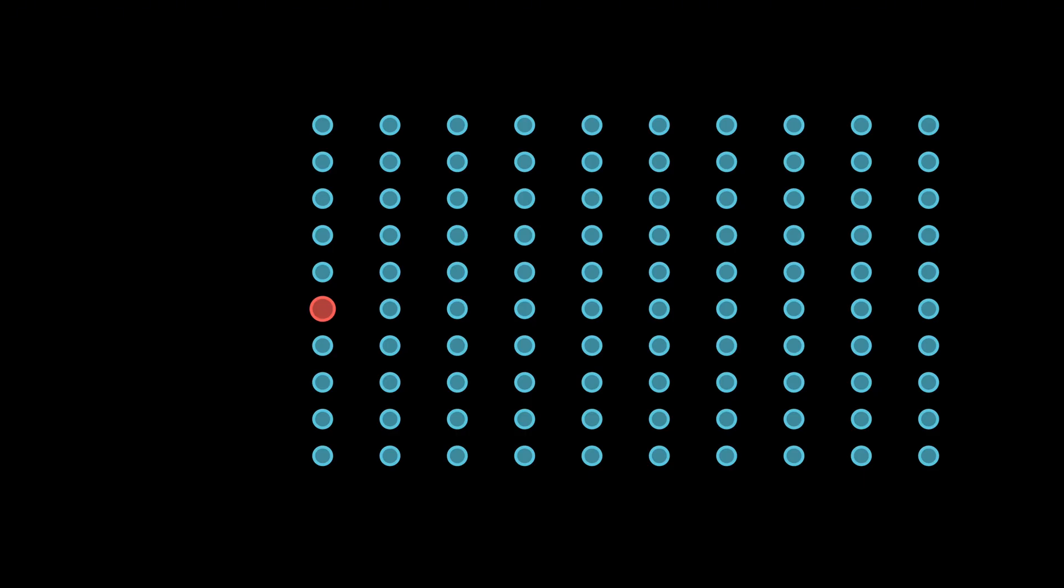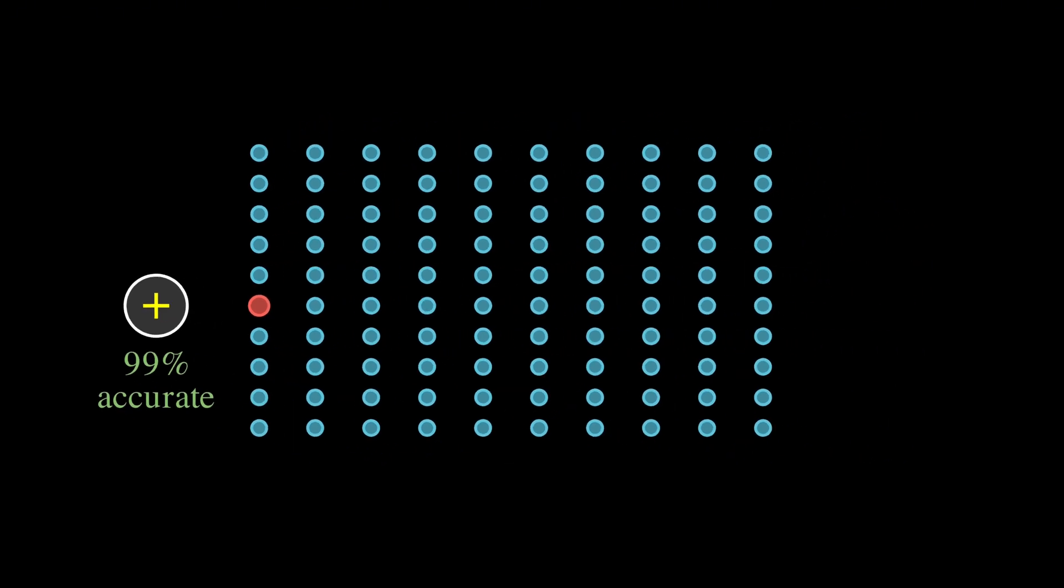Just one out of a hundred. And now imagine we have this medical test, a really good one, that's 99% accurate. It catches the disease 99% of the time when someone has it, and it correctly identifies healthy people 99% of the time too. Sounds pretty reliable, right? Well, here's where things get really surprising and counterintuitive.